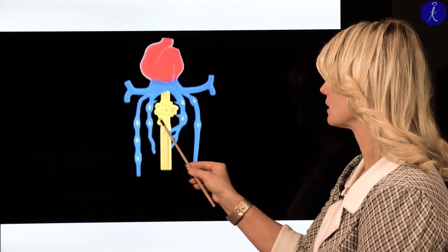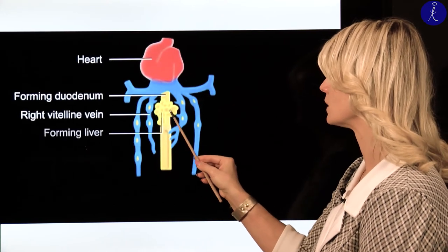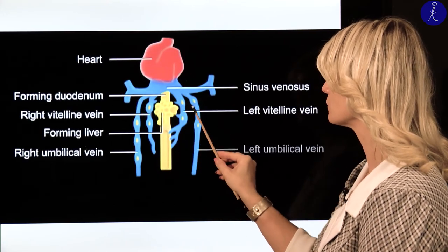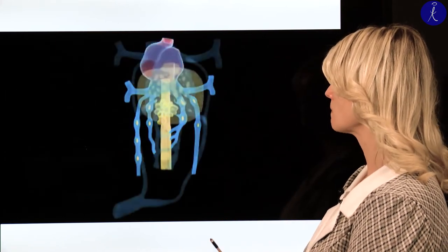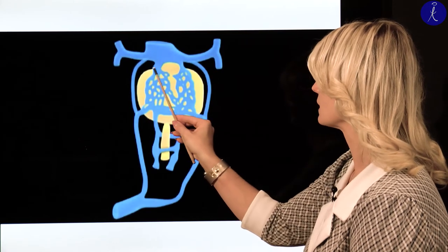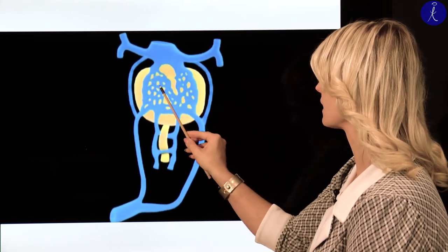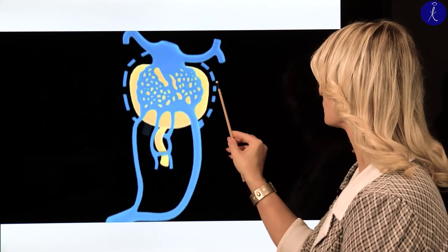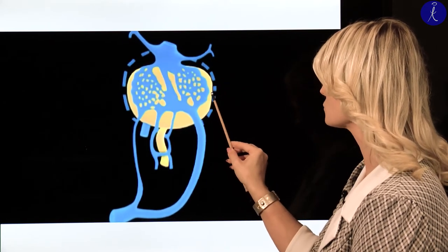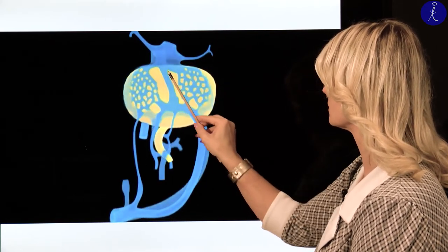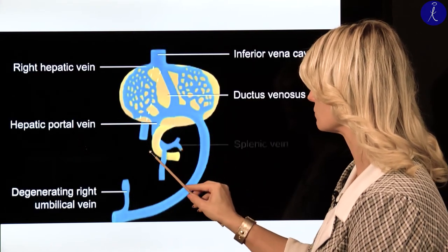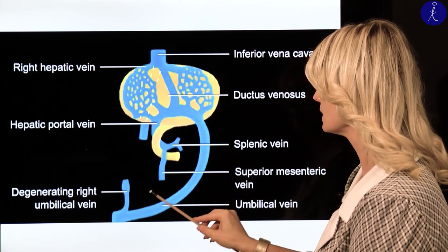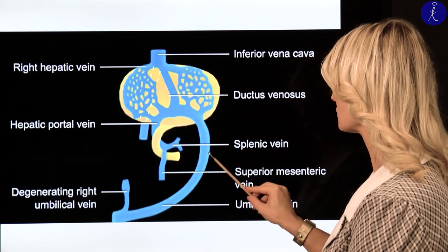Here is the developing liver bud; around it the vitelline veins and the umbilical veins are visible. These are the sinuses of the developing liver. The proximal part of the umbilical veins are closed. Here you can see the ductus venosus. From the distal part of the vitelline vein will develop the portal system, and the left umbilical vein will be closed.